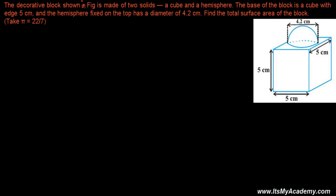The hemisphere fixed on top has a diameter of 4.2 centimeters, so the radius is half of that, which is 2.1 centimeters. We are given pi as 22 over 7. We need to find the total surface area of this block.